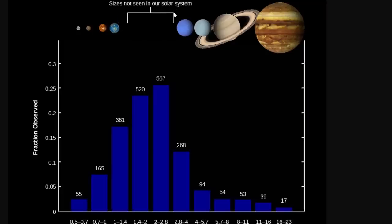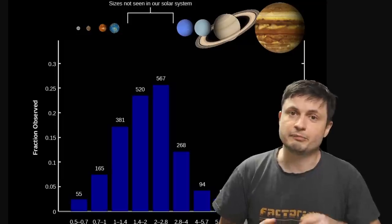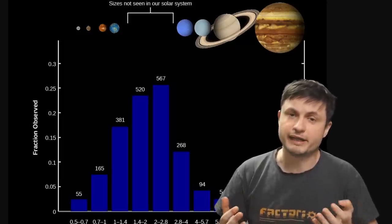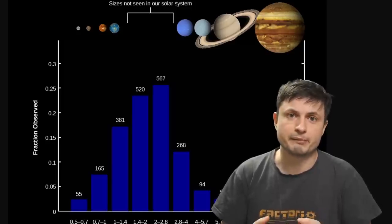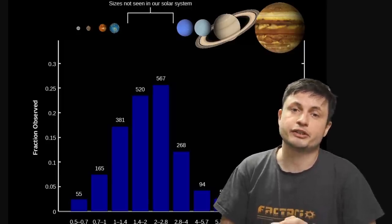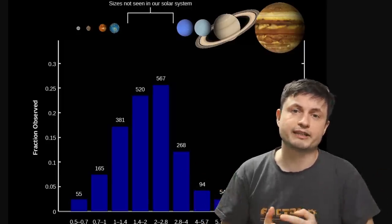But the vast majority of planets we've discovered so far are basically in between Earth and Neptune in mass and size. These are so-called super-Earths, or sometimes known as mini-Neptunes. They essentially represent the largest number of all the exoplanets found, and also represent the largest number of planets per star on average around a typical star.